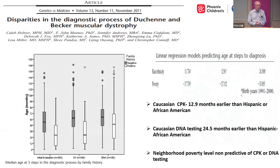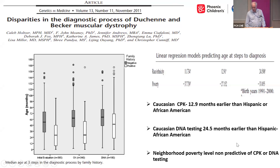The papers coming out of MD STARnet were quite revealing. They used three features: initial evaluation, first CPK drawn, and DNA confirmation. Initial evaluation for boys with Duchenne's was around age four-and-a-half to five; CPK determination was usually six months to a year later; DNA confirmation about a year after that. A linear regression model showed that if you were Caucasian, your CPK was drawn about 12.9 months earlier than Asian or African American patients. If you came from a poverty area, your ability to be picked up was similar to having a family history of Duchenne's — suggesting patients were being evaluated but Duchenne's wasn't being recognized.